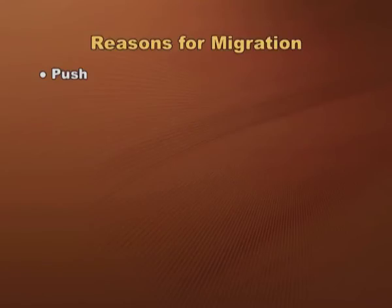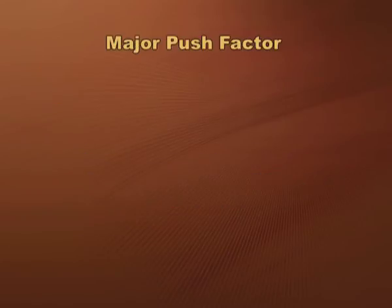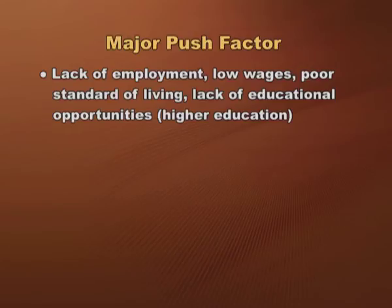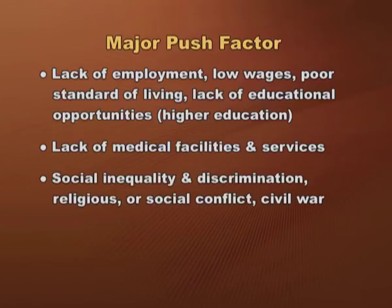What makes people migrate from one place to another? The reasons for migration can be divided into two types: push factors and pull factors. Push factors are conditions prevailing in the place of origin which force or encourage people to leave a particular area. Major push factors include lack of employment, low wages, poor standard of living, lack of educational opportunities — particularly higher education — and lack of medical facilities and services.